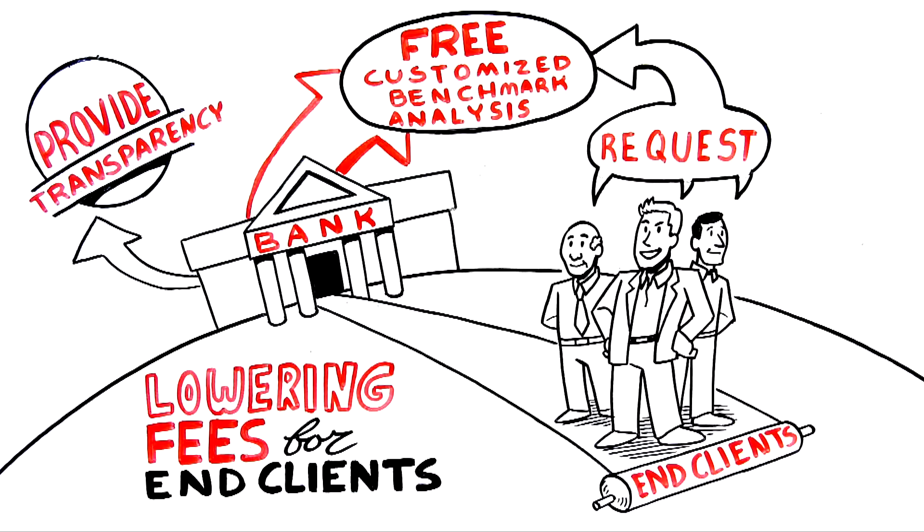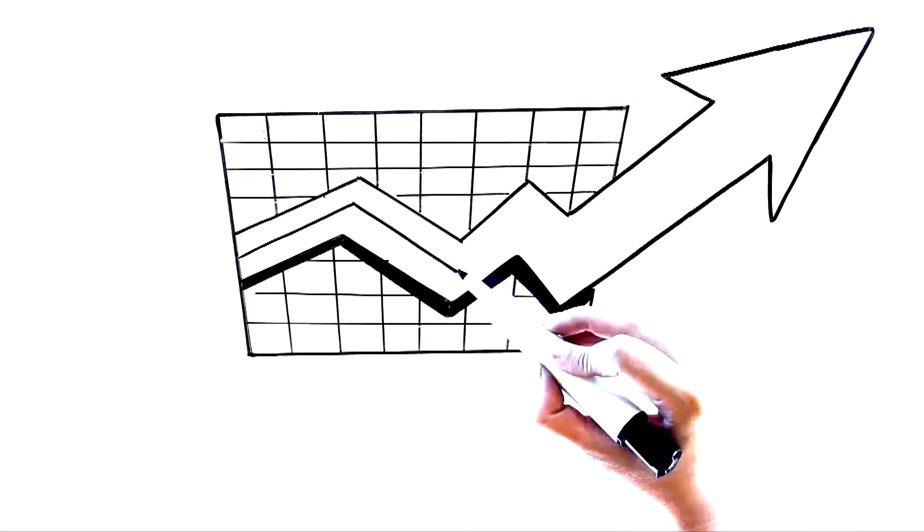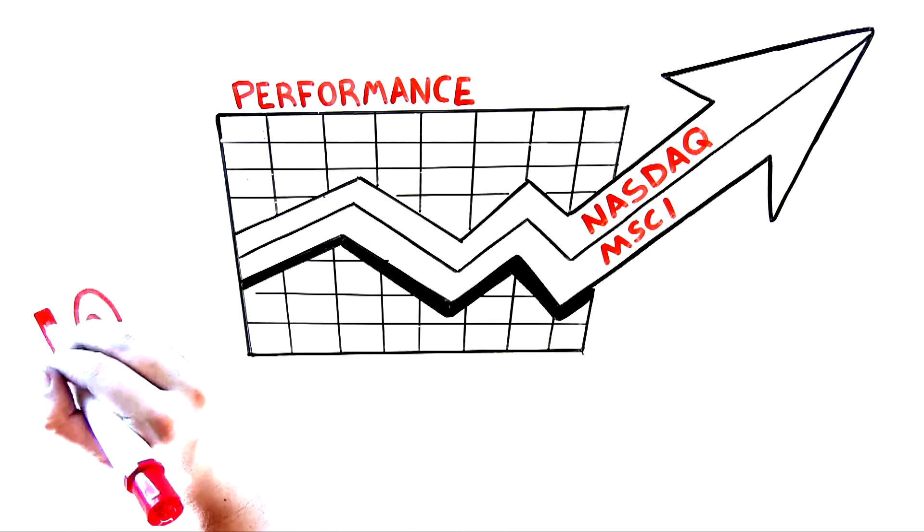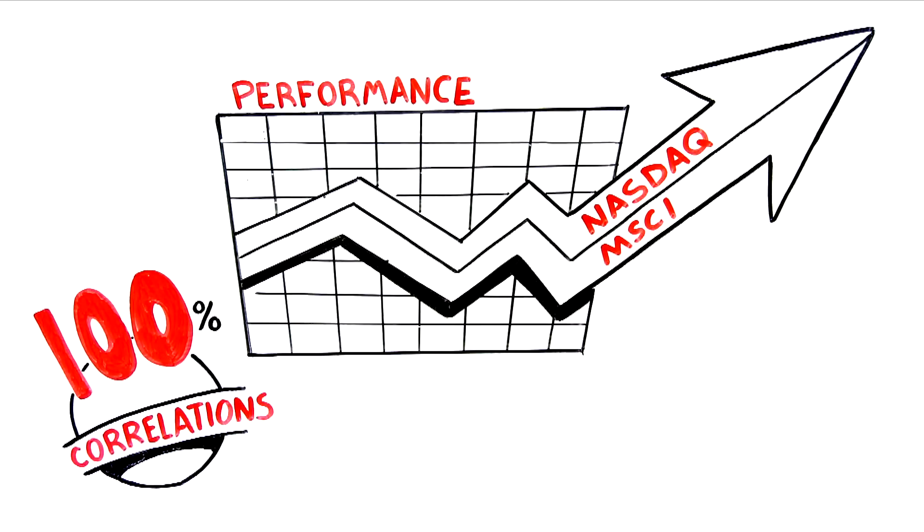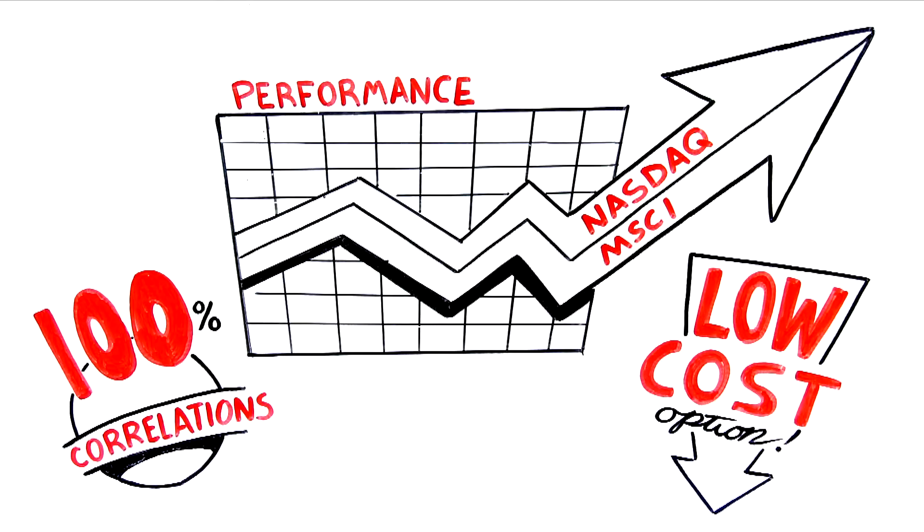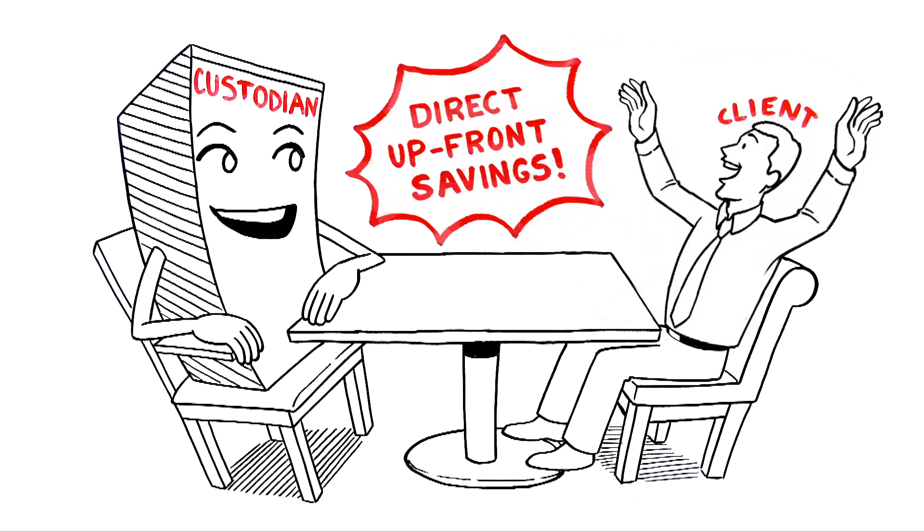Now you may ask, where does Nasdaq come in? The Nasdaq Global Index Family, a transparent series of global equity benchmarks which matches up to competitive offerings with nearly 100% correlations, will be offered by each bank as a low-cost option for clients to consider. This will enable investors to realize direct upfront savings or avoid additional costs when adopting Nasdaq benchmarks.